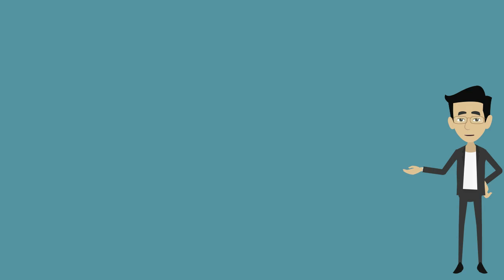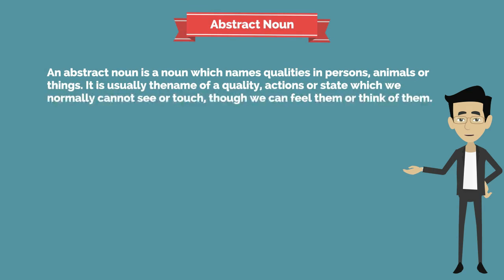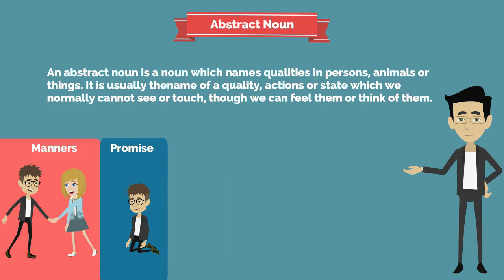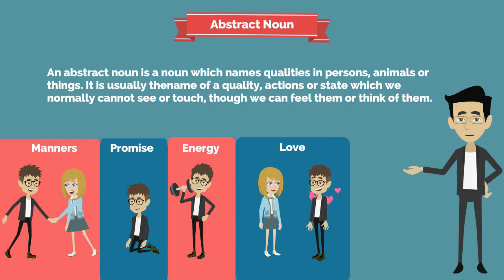The next type is the abstract noun. An abstract noun is a noun which names qualities in persons, animals, or things. It is usually the name of a quality, action, or state which we normally cannot see or touch, though we can feel or think of them. Examples: manners, promise, energy, love, fear, and so on.